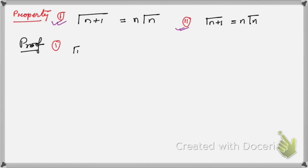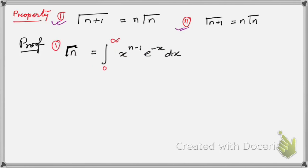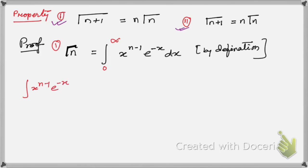Γ(n) is given by this — that is by definition of the gamma function. Now let me use integration by parts. You see x to the power n−1 times e to the power −x, where x^(n−1) is an algebraic function and e^(−x) is an exponential function. When we have a product of two functions we need to follow the ILATE rule.